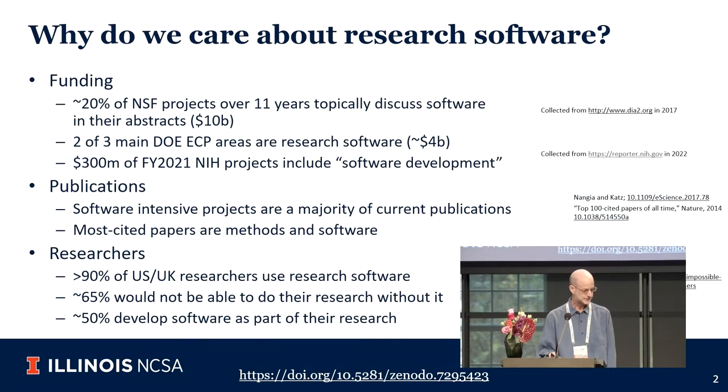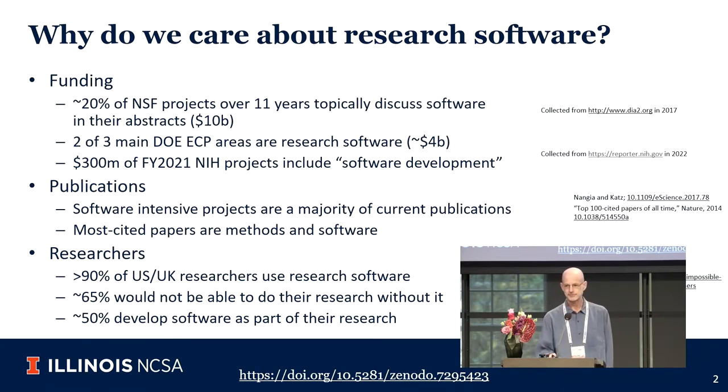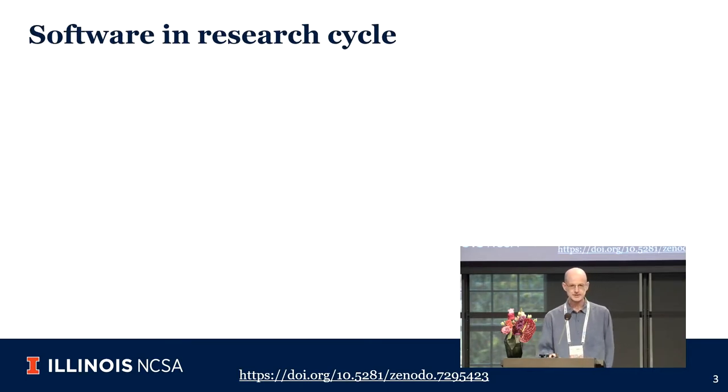We can also look at publications and see that software-intensive projects are a majority of current publications. The most cited papers are almost all either software papers or methods papers. If we ask researchers — which has been done in the US and the UK — we find that they overwhelmingly use research software, that their research is dependent on it, and about half of them are actually developing software as part of their research.